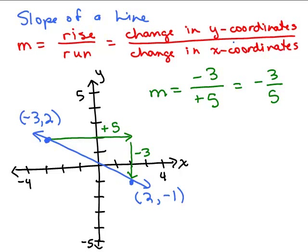Now, what do I mean by the change in y coordinates over the change in x coordinates? When I'm going from the point (negative 3, 2) over to the right five spaces, that's the difference between the x coordinates. The x coordinate in the first ordered pair is negative three and in the second is two — that's five spaces away, which is the difference of two and negative three. Looking at the y coordinates, I went down three spaces because that's the difference between the heights: two minus negative one, a basic difference.